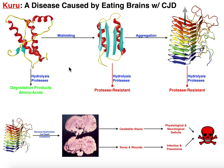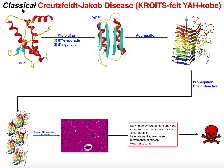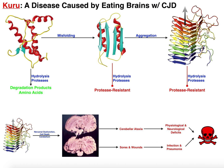The major difference is that Creutzfeldt-Jakob disease, the classical form, arises because of an intrinsic misfolding of the prion protein. It does not require consumption or an extraneous source of the prion protein in its misfolded or aggregate form — this is something that happens intrinsically within a person. Kuru, on the other hand, requires an extraneous source of the misfolded prion protein.